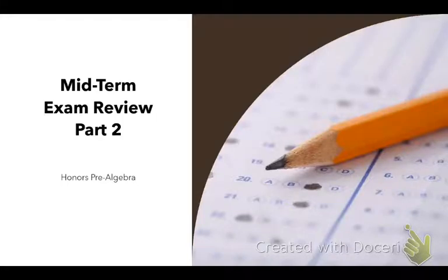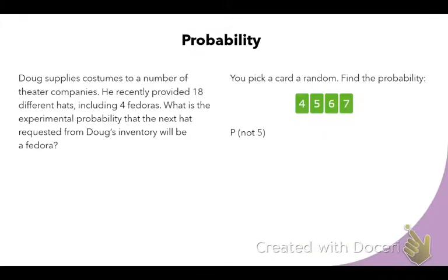We're in part two of our midterm review. Yesterday we reviewed chapters one through six - rational numbers, expressions, equations, inequalities, proportions, ratios, and percent problems. We covered all of that information yesterday. Today we're going to focus on probability and statistics.